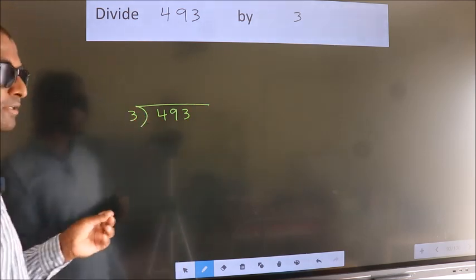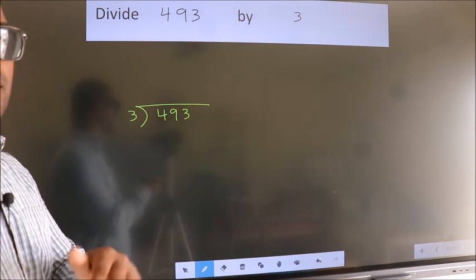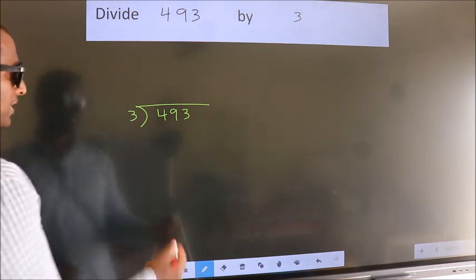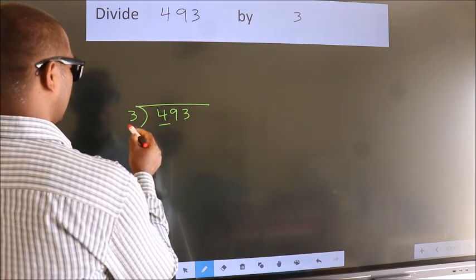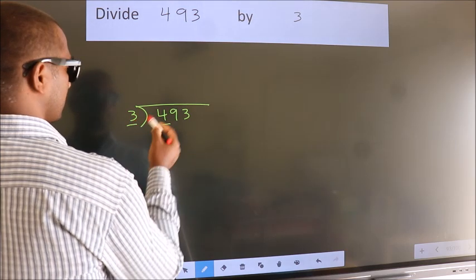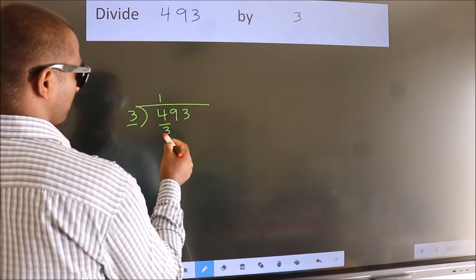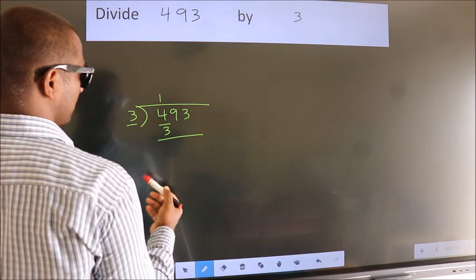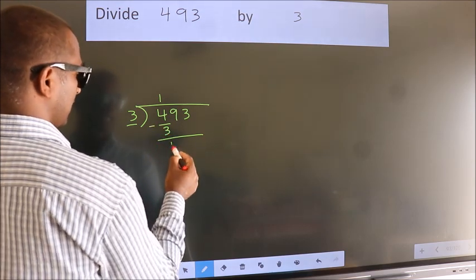This is your step 1. Next, here we have 4, here 3. A number close to 4 in the 3 table is 3 1s 3. Now we should subtract. We get 1.